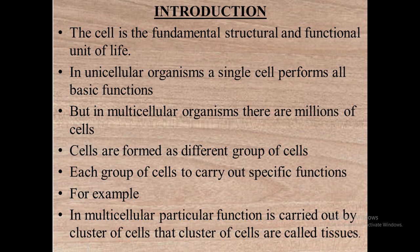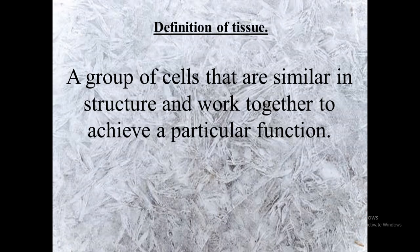In a multicellular organism, cells are formed as different groups, and each group carries out specific functions. In multicellular organisms, a particular function is carried out by a cluster of cells. That cluster of cells is called a tissue. A tissue is a group of cells that are similar in structure, originated from the same region, and work together to achieve a particular or specific function.